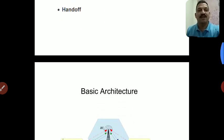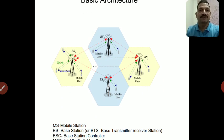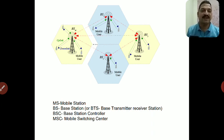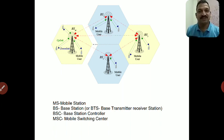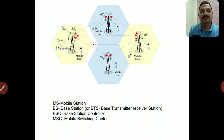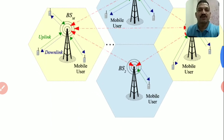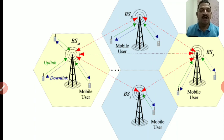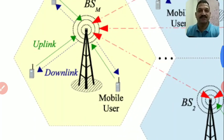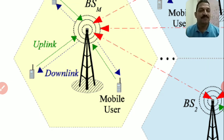जैसा कि हमने last class में बताया कि Cellular Communication System के basic architecture में चार components होते हैं। एक Mobile Station, for example Mobile Phone। इसके अलावा Base Station जिसको BS कहते हैं या BTS भी कहते हैं — Base Transceiver System — जो कि hexagonal shape में दिख रहा है। इसी को हम Cell कहते हैं। हर cell में एक Base Station होता है, और उस Base Station में एक tower होता है जिसका अपना एक coverage area होता है। उस coverage area में हम हमारा mobile phone use कर सकते हैं।